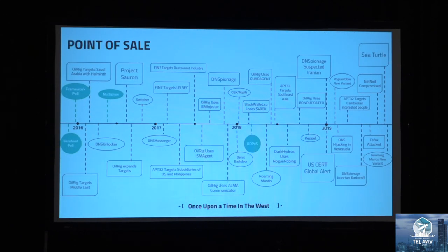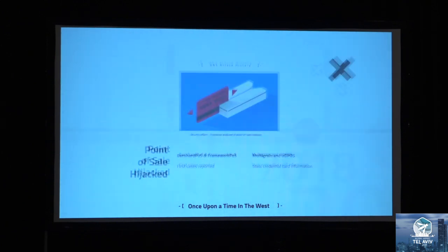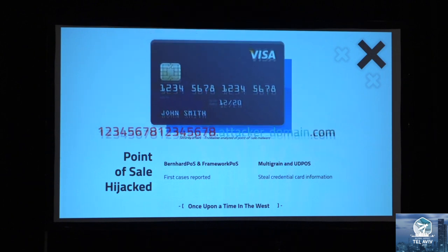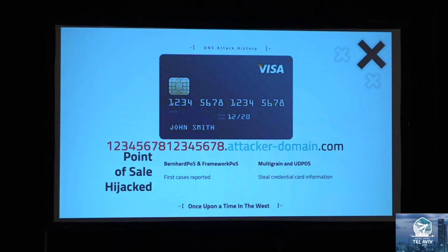We have also observed DNS tunneling being used in point-of-sale malware. Since 2015, we observed BernardPOS, one of the first reported malware pieces to use DNS tunneling for data exfiltration. This has started to appear in many other POS malware because it makes sense — credit card data like the card ID and expiration date are small chunks of data that perfectly fit as subdomains, allowing the attacker to exfiltrate information undetected. The latest POS malware using this technique has also added anti-analysis techniques to stay undercover and will avoid infecting victims that are of no use to them.